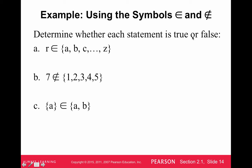So determine whether each statement is true or false. Is R an element of this set? Well, you see the dot, dot, dot here. This really just means that this pattern continues until it ends here at Z. So this would really just be the alphabet. And R definitely is an element of that set. So that's true.